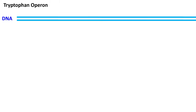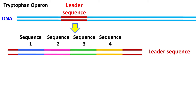The crux of tryptophan operon lies in understanding the function of leader sequence and the phenomenon of transcription attenuation. The leader sequence has four sequences termed as sequence 1, sequence 2, sequence 3, and sequence 4.